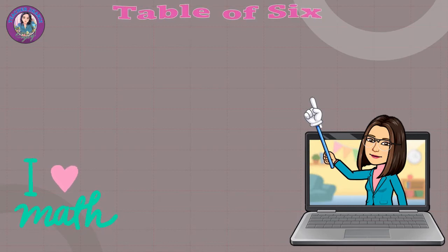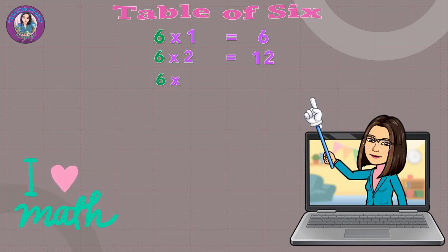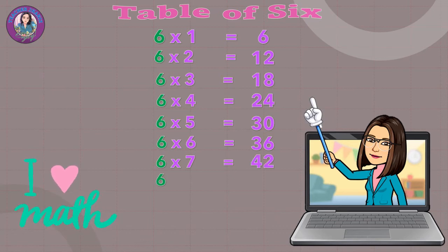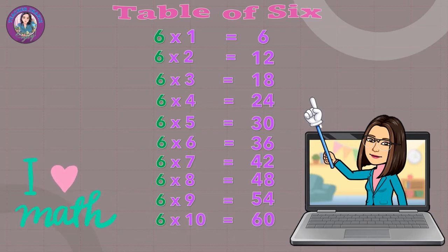Table of 6. 6 x 1 equals 6. 6 x 2 equals 12. 6 x 3 equals 15. 6 x 4 equals 24. 6 x 5 equals 30. 6 x 6 equals 36. 6 x 7 equals 42. 6 x 8 equals 48. 6 x 9 equals 54. 6 x 10 equals 60.